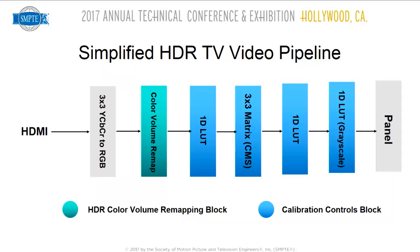In this simplified HDR TV video pipeline, the teal color is where the color volume remapping would happen. It might be done in a 3D lookup table, a combination of 1D and 3D LUT, or a 1D and 3x3 matrix — but it's labeled as color volume remapping happening upstream of the calibration controls. We have no control over that color volume remapping. If we start adjusting stuff after that happens, we're essentially deviating from what the picture quality engineers have decided is the correct tone map.